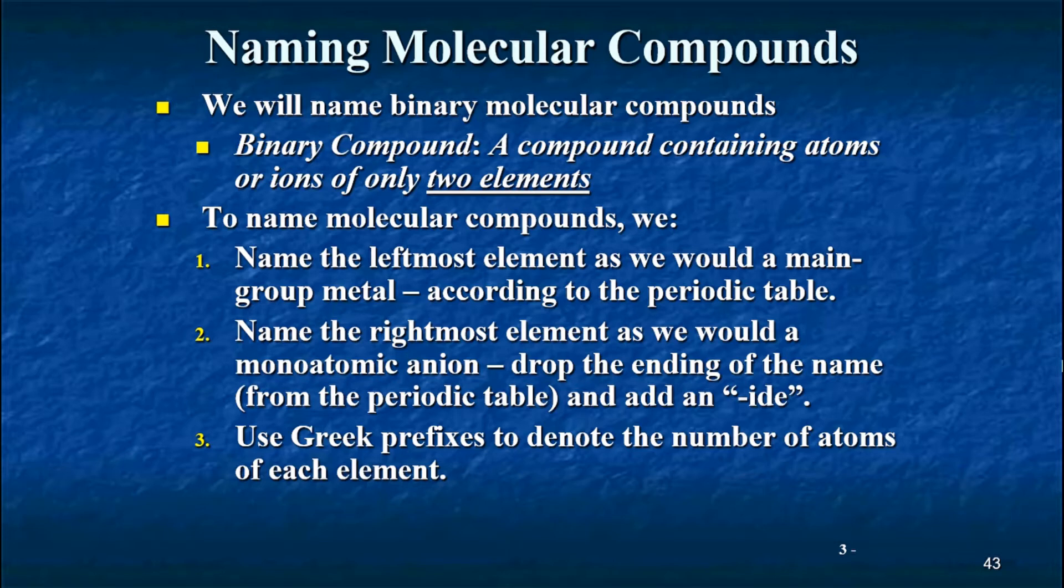Let's say that I have a molecular compound formula in front of me. So I have two elements in there for a binary compound. What I'm going to do is I'm going to name the leftmost element, the first one going from left to right, the same way that I would name a main group metal. Remember when we did the ions? When it was sodium, we call it sodium. When it was calcium, we call it calcium. We're going to apply this same rule here. In other words, we're just going to use whatever the name of the element is on the periodic table. So if it's nitrogen, it's nitrogen. If it's chlorine, it's chlorine.